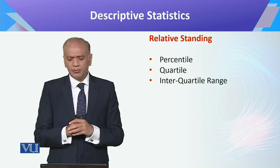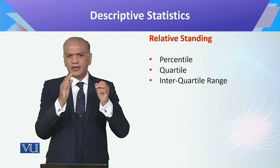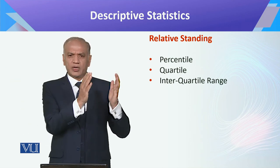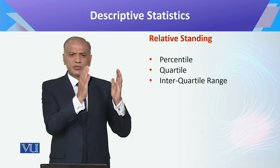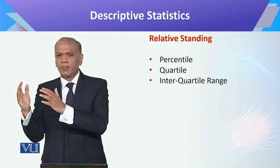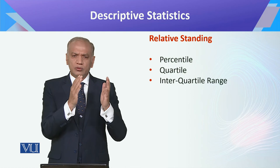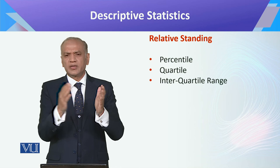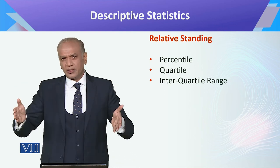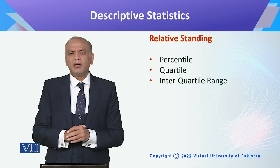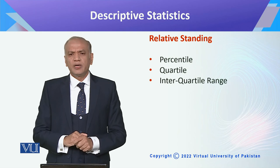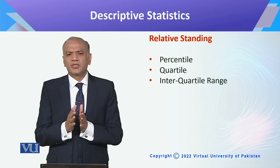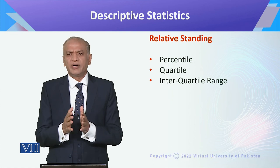Relative standing refers to where data sits within the overall population. There are different ways to do this: you can divide data into four parts — first, second, third, and fourth quartile. You can divide it into ten parts, giving you deciles, or into one hundred parts, giving you percentiles. These are some of the key things we discussed about descriptive statistics.